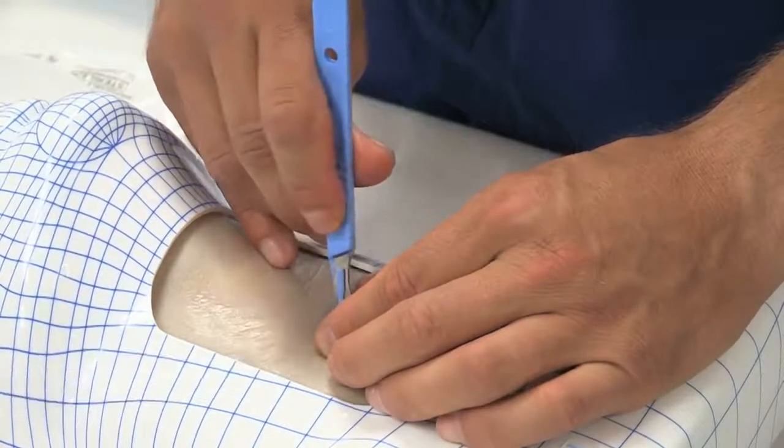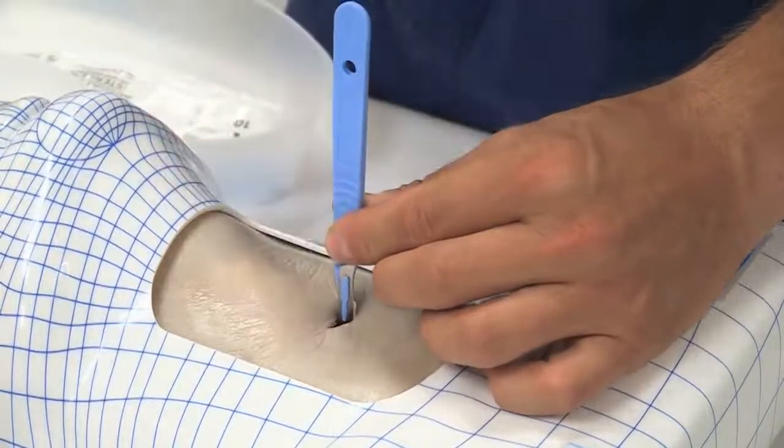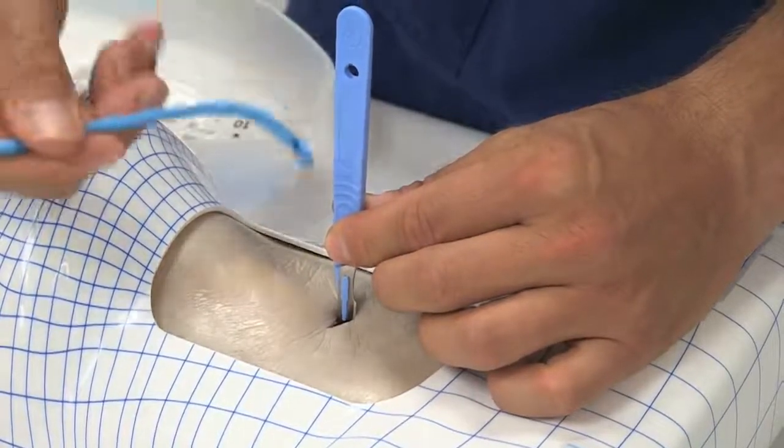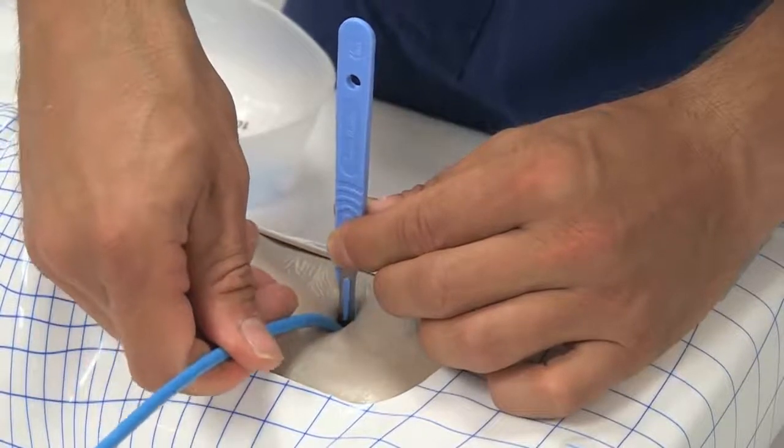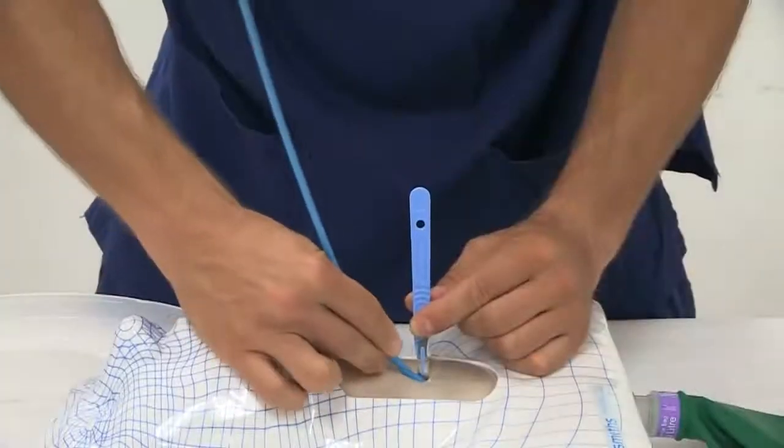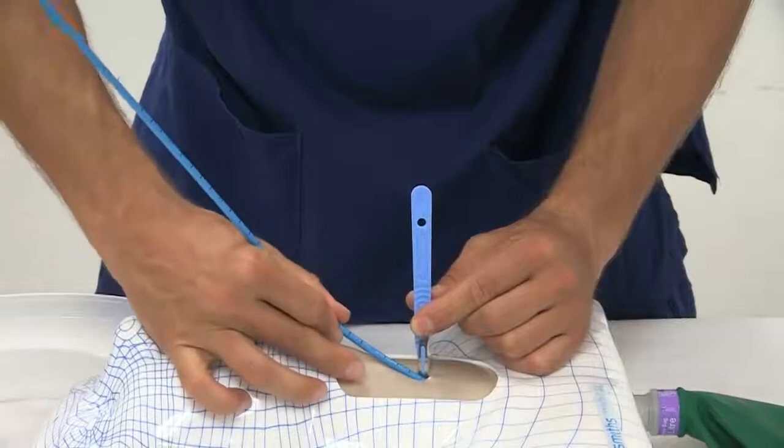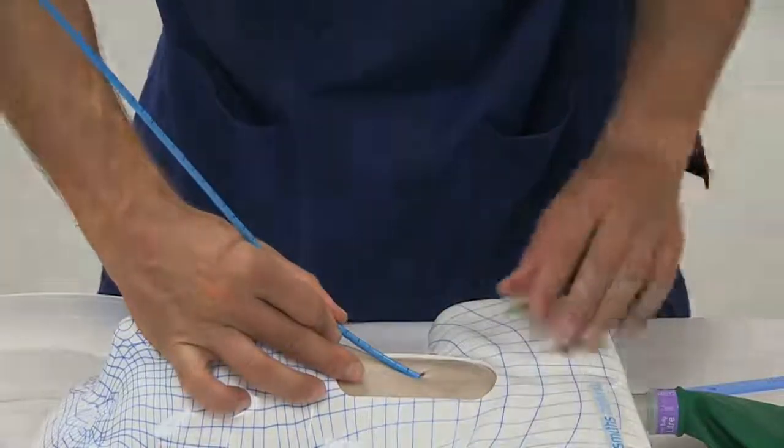While advancing the bougie, tracheal rings can often be felt. If tracheal rings are not identified, it may be necessary to feel for hold up of the bougie to exclude gastric or pre-tracheal insertion. This should be again performed with gentle two finger pressure only.